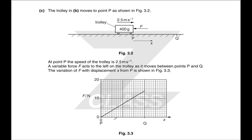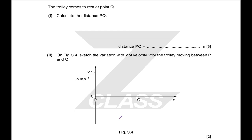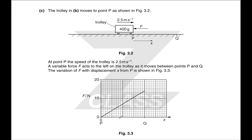The trolley moves to point P as shown. At point P the speed is still 2.5 m/s — essentially nothing has changed. Between P and Q you have a variable force, and the trolley comes to rest at point Q. Calculate the distance. The key here is that work done is the area under a force-distance graph.